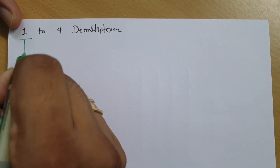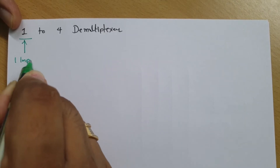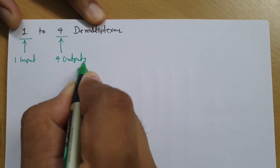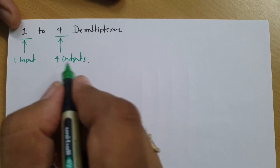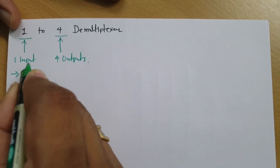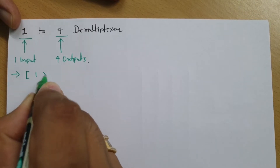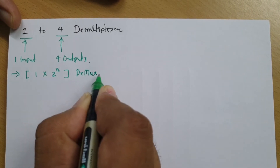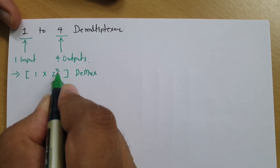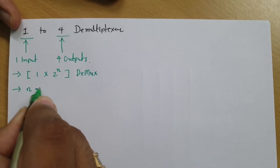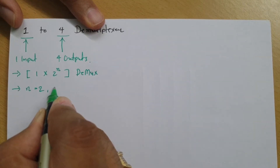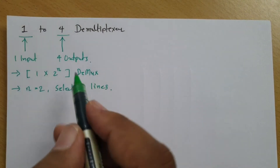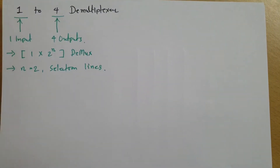From its name itself, we can say: '1' indicates one input, and '4' indicates four outputs. Comparing with the standard form of a 1-to-2^n demux, we can say 4 equals 2 to the power 2, meaning n equals 2. Since n equals 2, there are two selection lines.